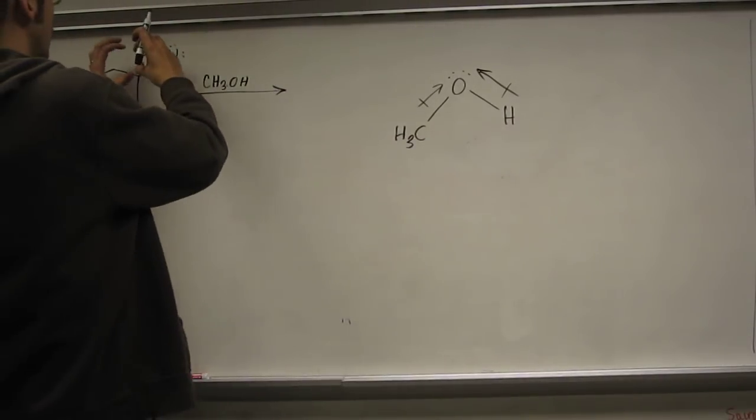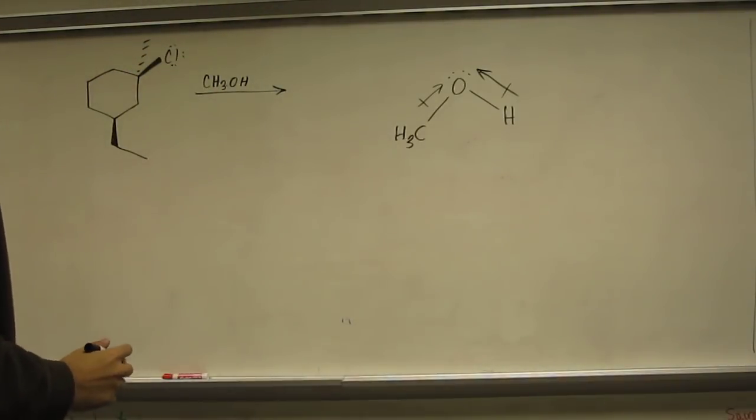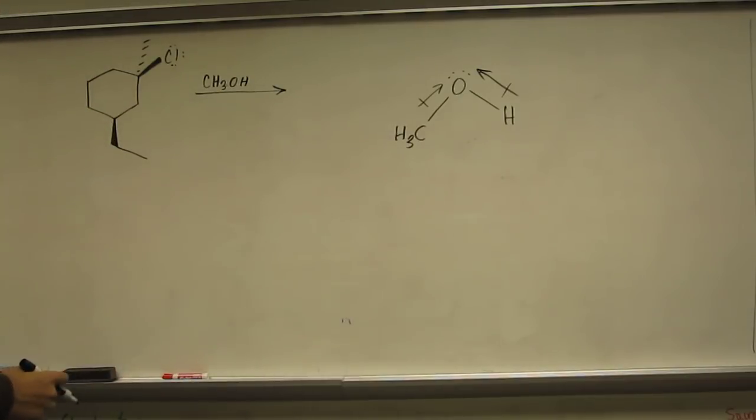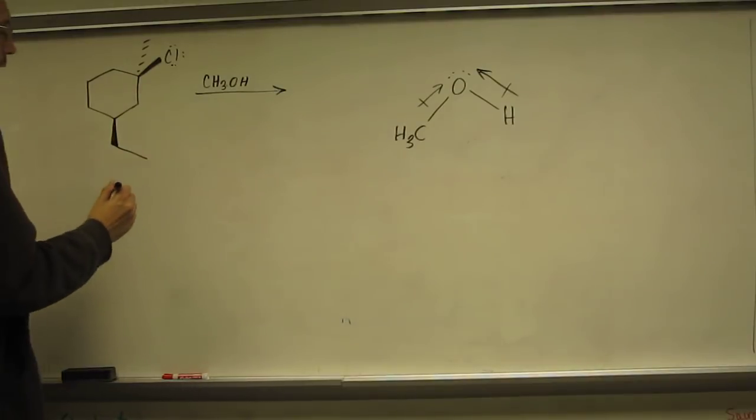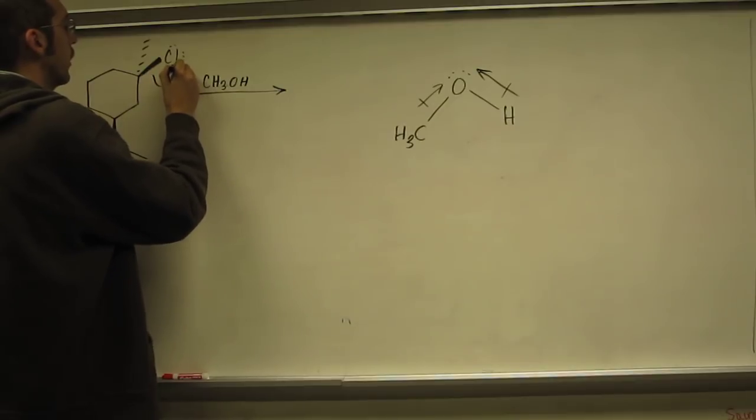So what that will do is tend to pull the ion away, the good leaving group away from the alkyl halide or the eventual alkyl group, because you've got a tertiary carbocation that's going to form. So let's just show that mechanism really quick.